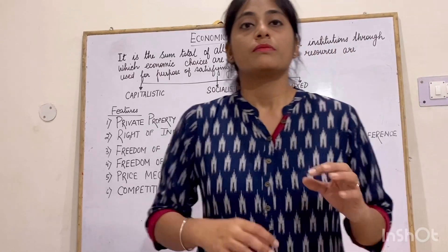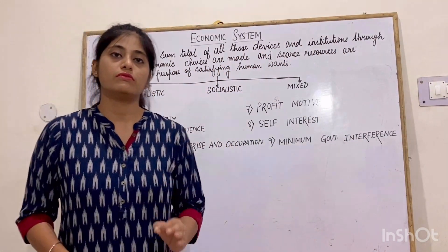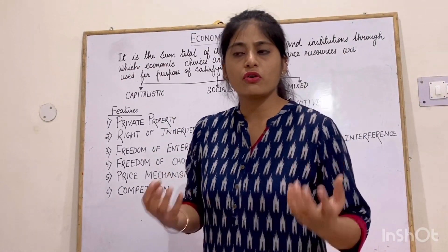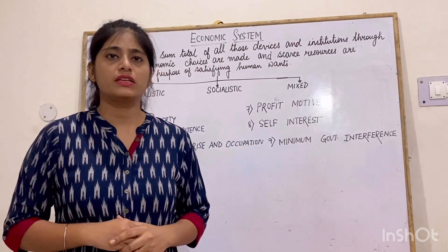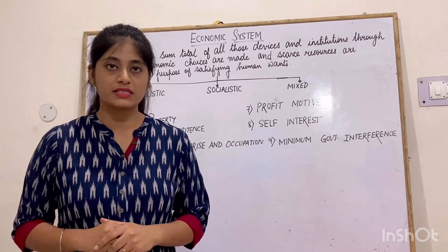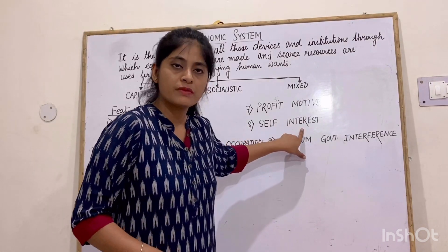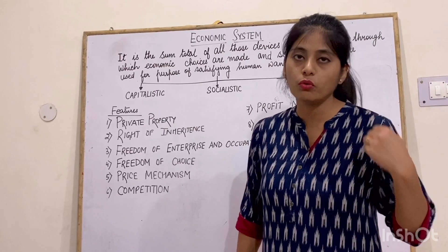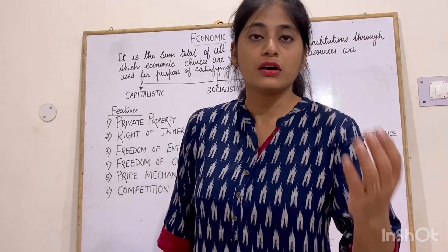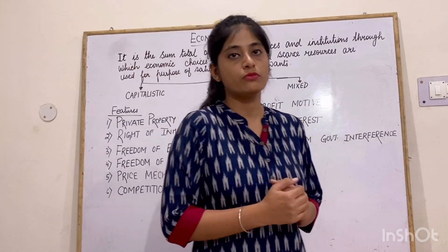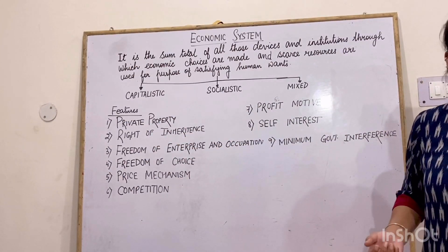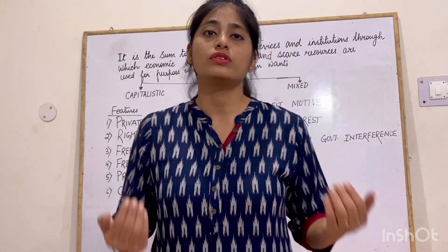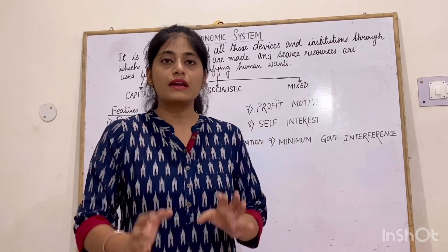Next is profit motive. Enterprises are working to earn more and more profit. They are producing such goods and services where they will get more profit, because the sole motive of any private individual is to maximize their profit. Next is self-interest. In this type of economy, each and every individual is working for their own interest — a producer is working to earn more profit, and a worker is working to earn more wages. Each and everybody here is thinking about their own interest.